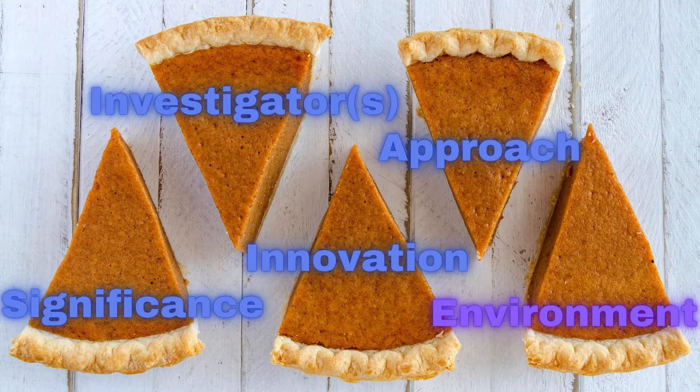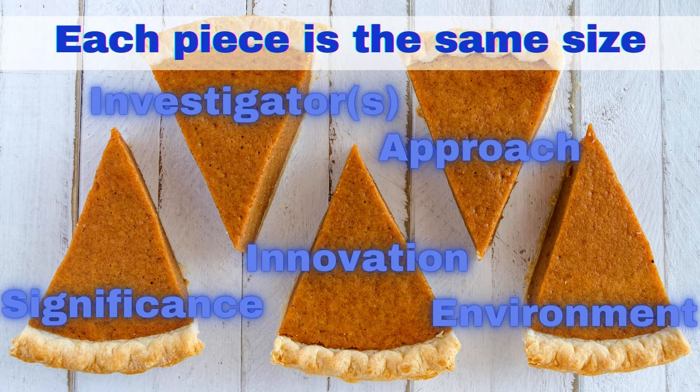The fifth scorable element is environment. This is the piece of the pie where you convince the reviewers that you have the environment to get this work done successfully — you have all the equipment you need, all the expertise you need, and all the facilities. Each of these five pieces of pie are the same size: they each factor 20% into the initial impact score that each reviewer gives your proposal. So make sure you give adequate care to each of these slices of pie.